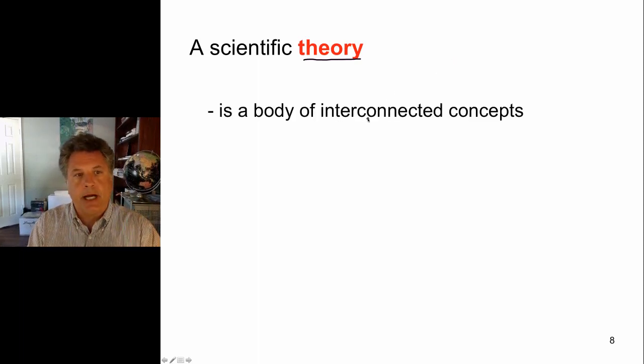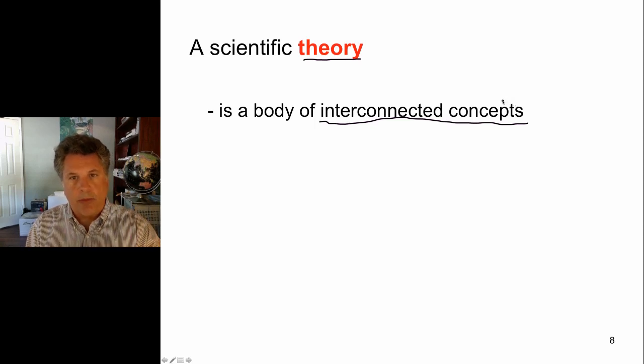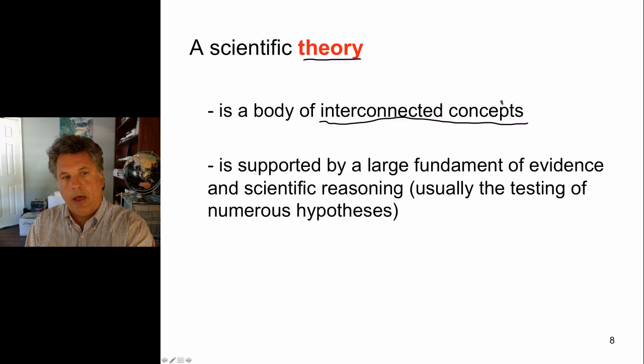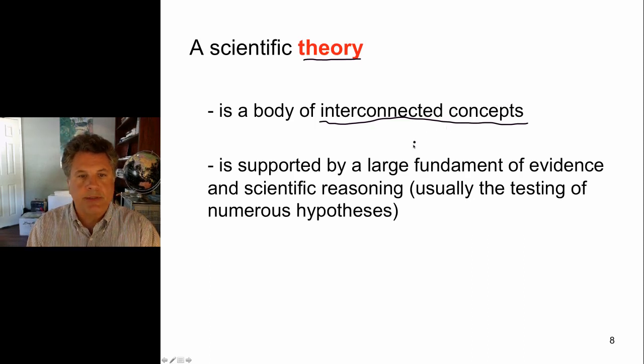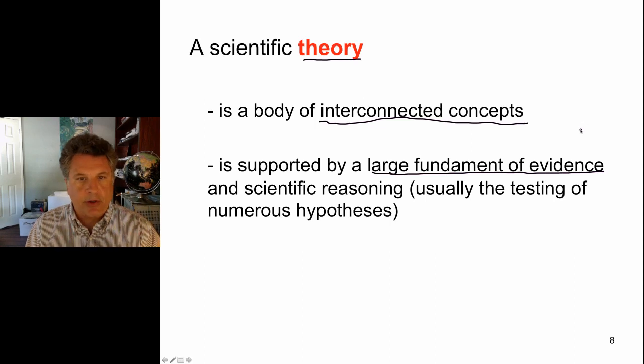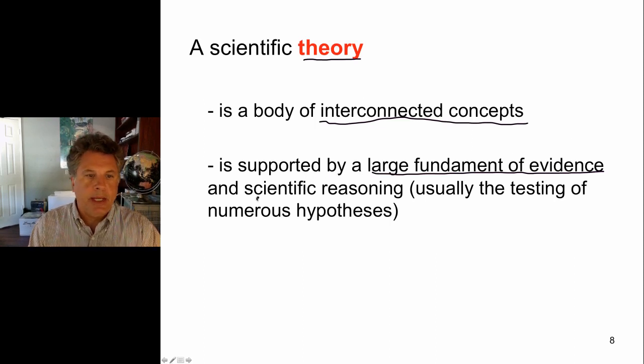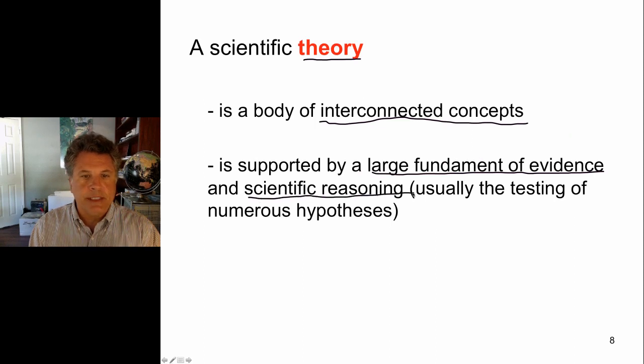A scientific theory is based on a body of interconnected concepts and, in fact, is a body of interconnected concepts. And these concepts, which are encompassed by a large umbrella of a theory, are supported by a large fundament of evidence, empirical evidence, usually derived from experimentation and deductive reasoning, which tests a number of hypotheses that are parts of theories. Now, hypotheses can become theories if they are thoroughly tested. But usually, the word hypothesis is used to designate a smaller idea about how something works. Whereas a scientific theory usually encompasses a large number of concepts.